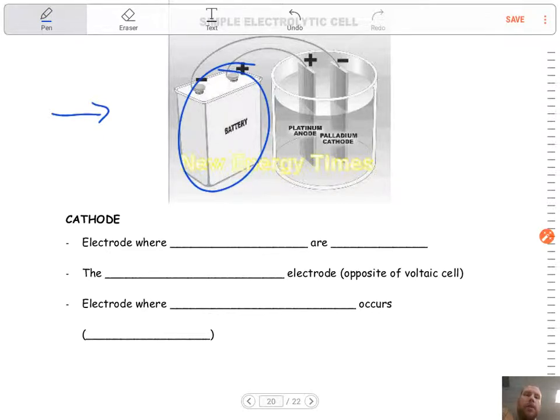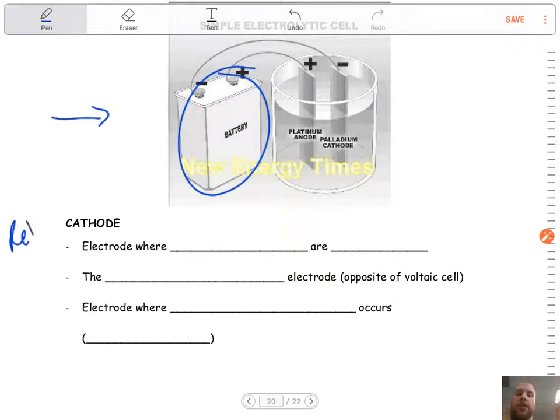So cathode. What's our saying for cathode, right? It still holds true. Red cat. So this is the electrode where electrons are sent.